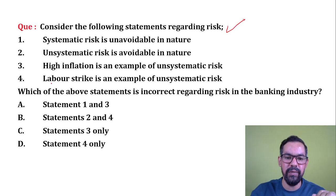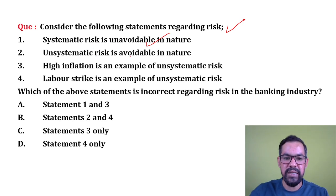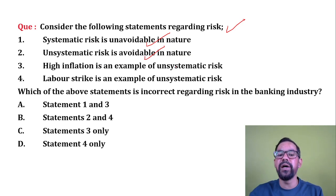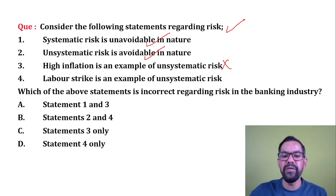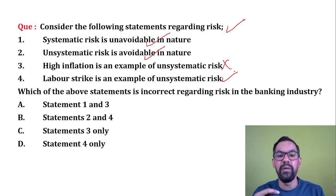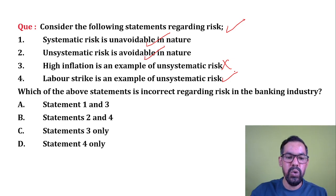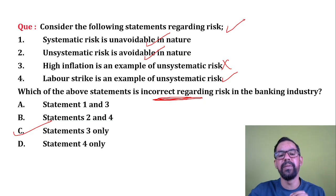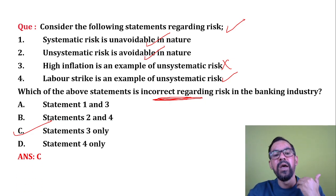Next question: consider the following statements regarding risk. Systematic risk is unavoidable in nature — correct. Unsystematic risk is avoidable in nature — correct. High inflation is an example of unsystematic risk — this is incorrect, as high inflation is an example of systematic risk. Labor strike is an example of unsystematic risk — correct, as it is avoidable. So the incorrect statement is statement 3, making option C the correct answer.